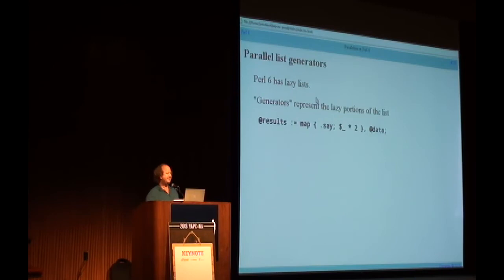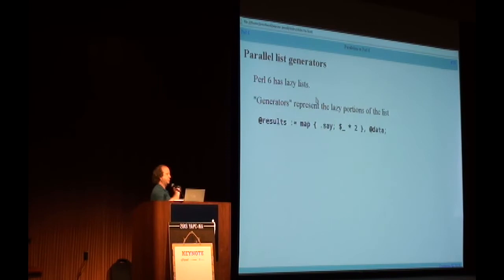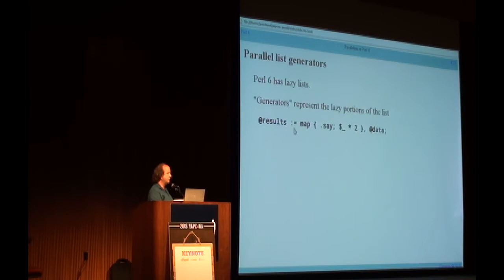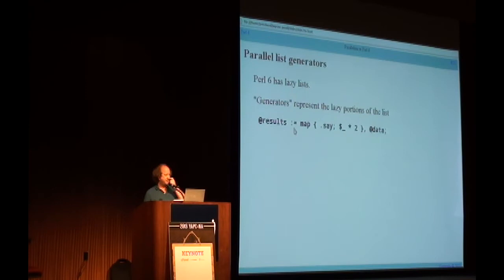Perl 6 has lazy lists, and generators represent the lazy portion internally. Here I have a statement binding @results to a map over @data: for each element, print it and multiply by two. I'm using bind instead of assignment because array assignment is naturally eager and I want this to be lazy. When this statement is executed, what is displayed on the screen? Nothing — because map is lazy. All I did was define the generator that will produce this array, but nothing has been generated yet.